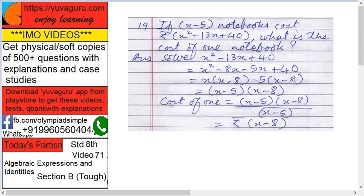x into x minus 8, x minus 8 common on both sides and here it becomes minus 5. So x minus 5 into x minus 8. This expression becomes x minus 5 into x minus 8.